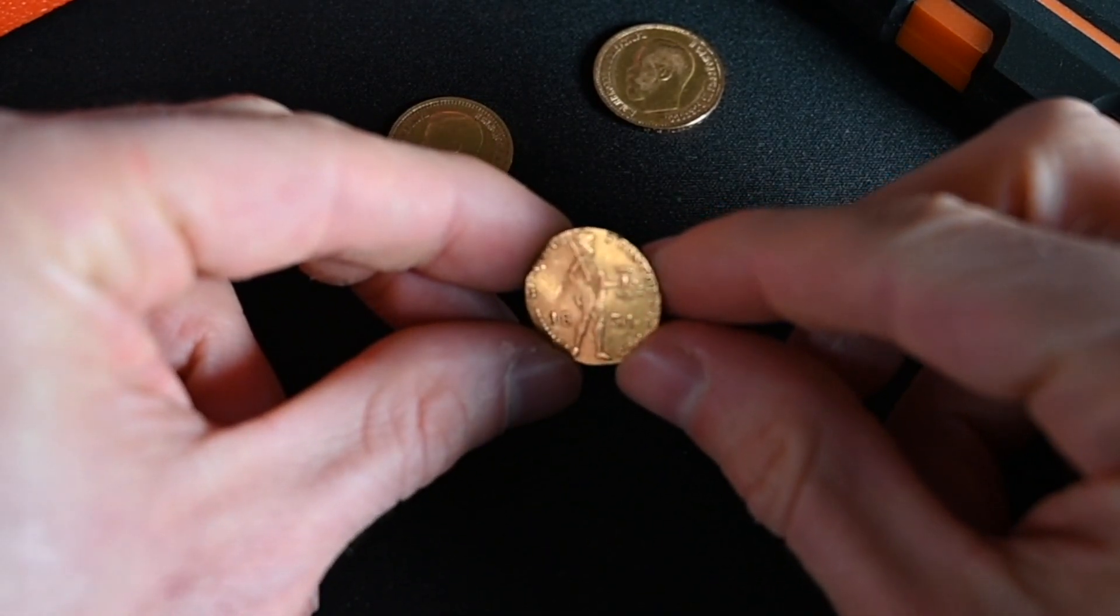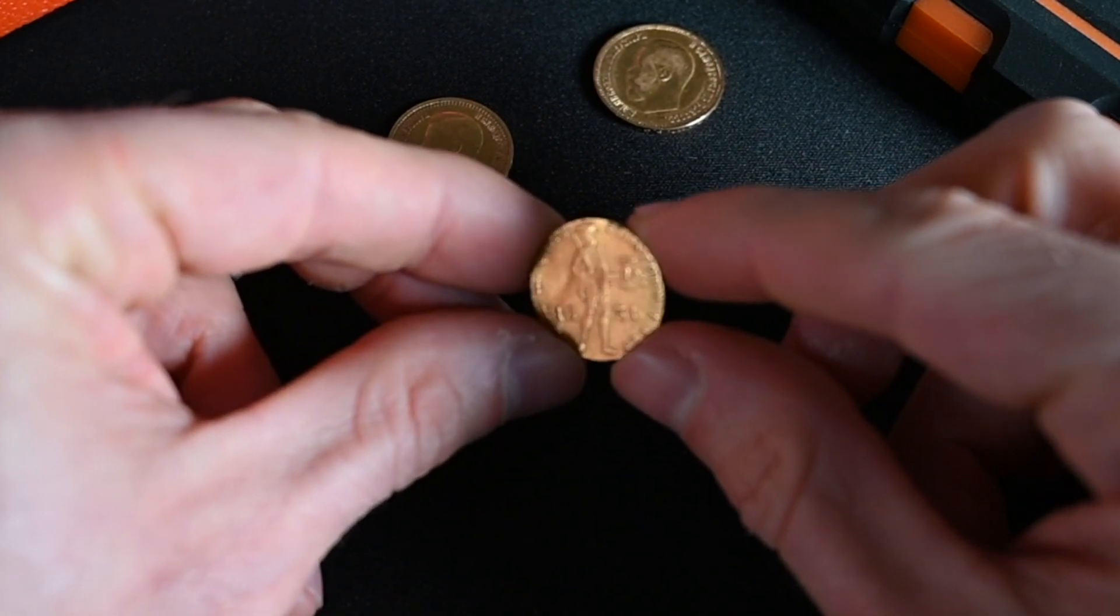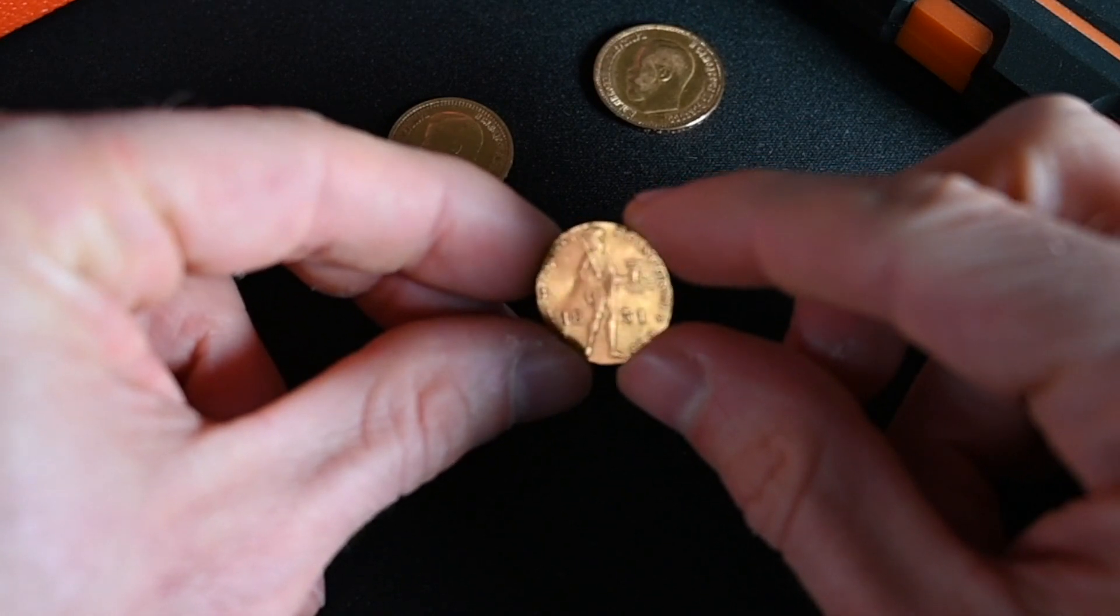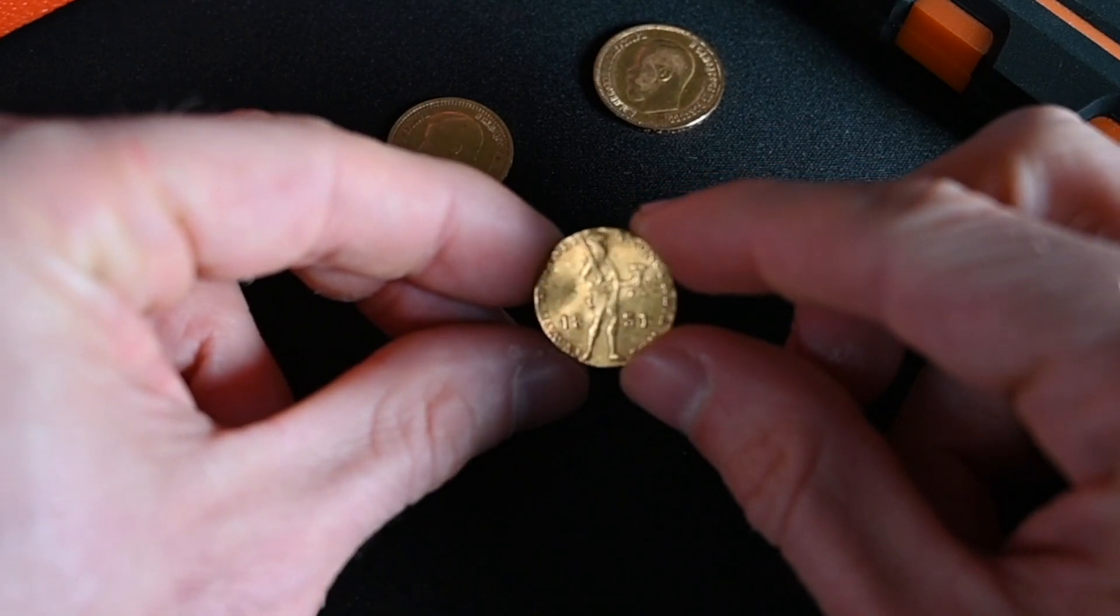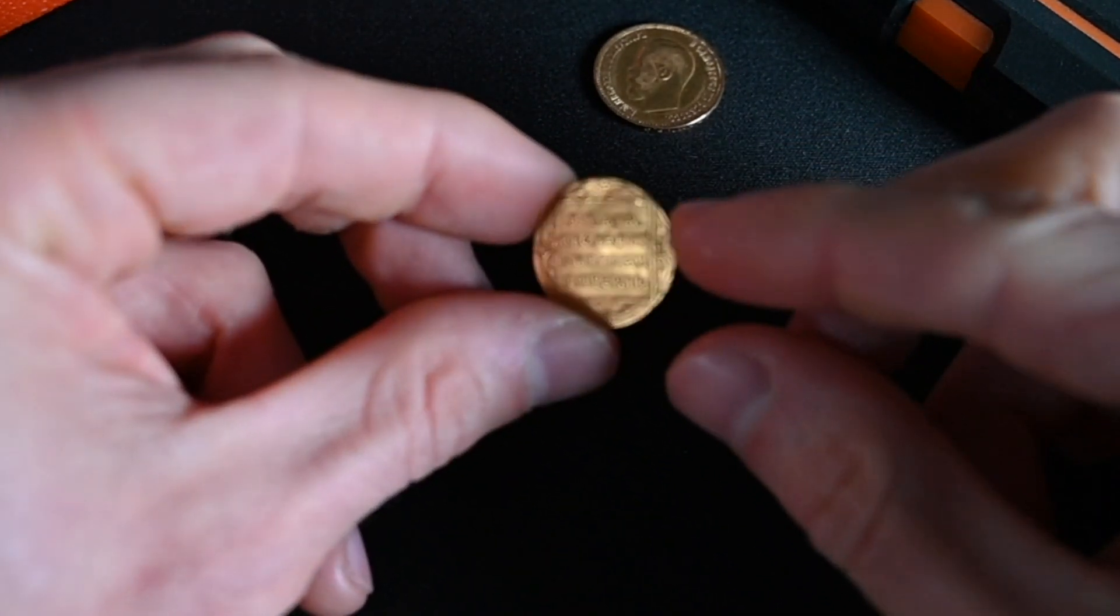And you can see this little soldier on there. And he's got a sword. And he's got a bunch of arrows. And it's really, really cool. Very cool design. And on the reverse, you see some words.